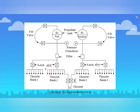This is the schematic diagram of a bi propellant system. The advantages of bi propellant systems over mono propellant systems include: high specific impulse in the range of 290 to 310 seconds, restart capability enabling use for both orbit injection and on-orbit operations, and errors are easily corrected with less fuel expenditure. The fuel saved in this way is used for additional station keeping life.